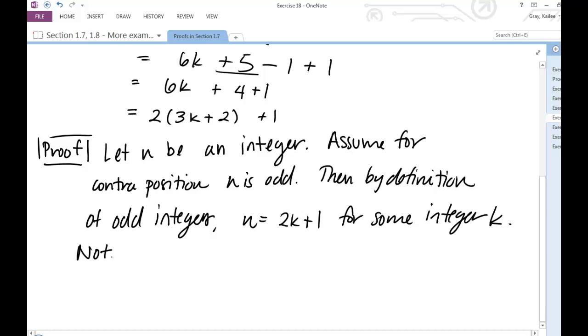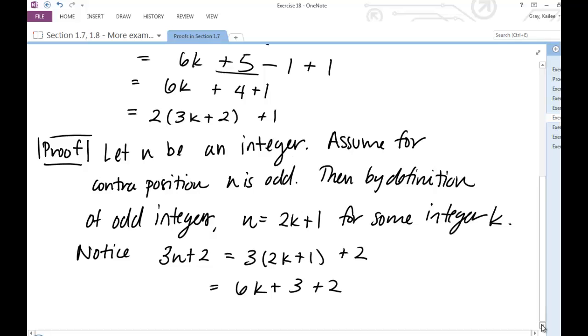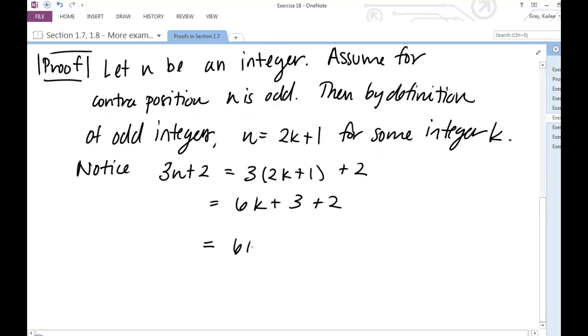Notice 3n plus 2 equals 3 times (2k plus 1) plus 2, just using that substitution there. It's equal to 6k plus 3 plus 2, is equal to 6k plus 4 plus 1. And we can do that adding and subtracting of 1 there. Basically what I did was rewrite that 2 as plus 1 plus 1. So I did that and then added those. That's okay, too. As long as it's clear that that 1 came from somewhere, and it's still equal, and your reader can see that, you're fine.